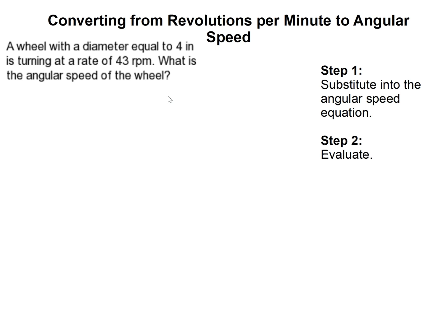How to convert from revolutions per minute to angular speed. A wheel with a diameter equal to four inches is turning at a rate of 43 rpms, which is revolutions per minute. What is the angular speed of the wheel? So we're going to first substitute into the angular speed equation.